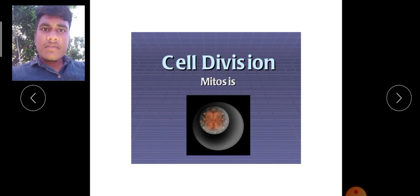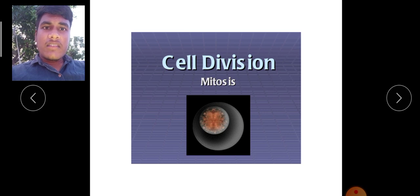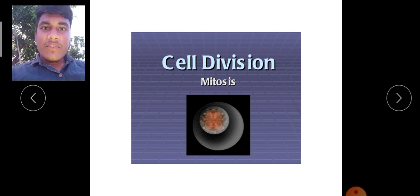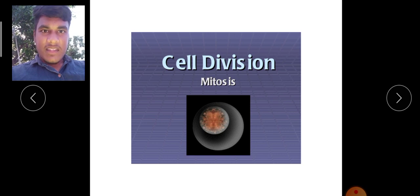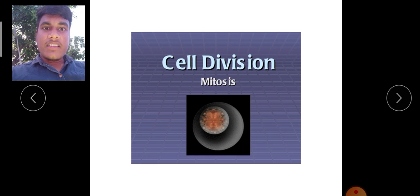The division of cells into 2, 3, 4, or whatever the number it may be — the division of cells is known as cell division. Cell division is happening in all the living creatures.